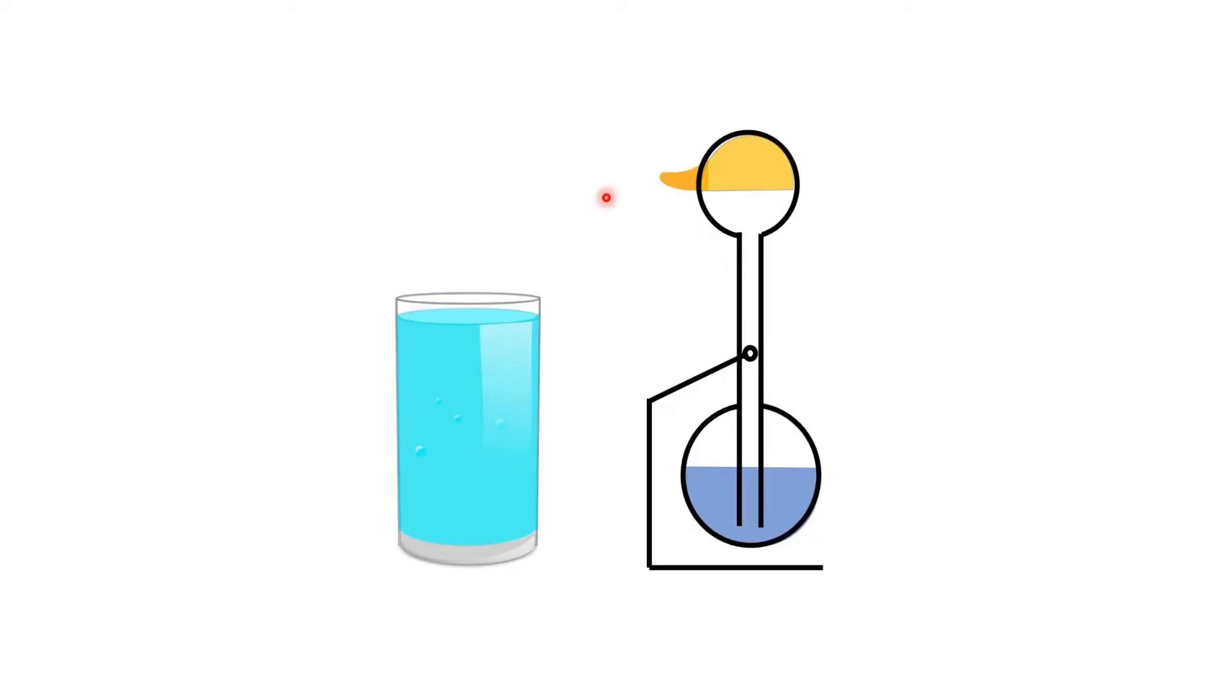Okay, so here comes the explanation of the drinking bird. We have the drinking bird which has a head and a bottom. These are empty volumes filled with liquid at the bottom. They are connected with a tube.